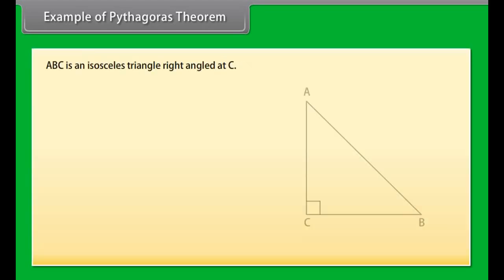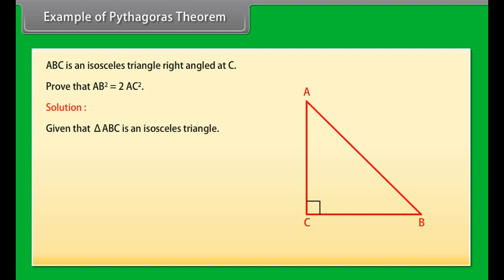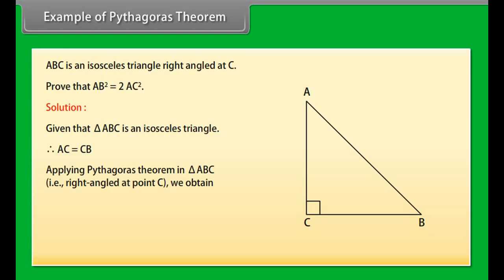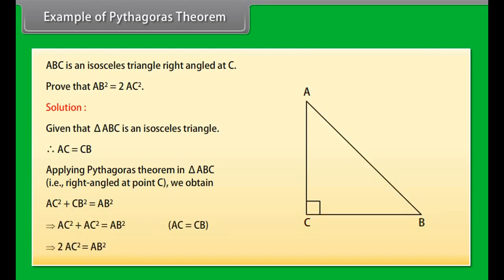Example: ABC is an isosceles triangle right angled at C. Prove that AB² equals 2AC². Solution: Since triangle ABC is isosceles, AC equals CB. Applying Pythagoras theorem in triangle ABC right angled at C: AC² plus CB² equals AB², which implies 2AC² equals AB². Hence proved.